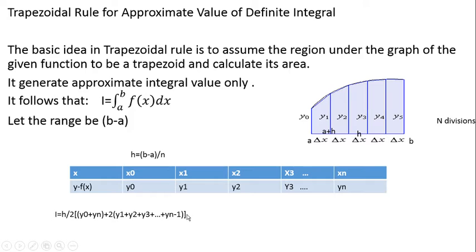The equation for calculating the trapezoidal rule is: (h/2) × [y₀ + yₙ + 2×(y₁ + y₂ + y₃ + ... + yₙ₋₁)]. This means: add the first term and last term (y₀ + yₙ), plus 2 times the sum of all intermediate terms (y₁ through yₙ₋₁). After calculating this sum, multiply by h/2.